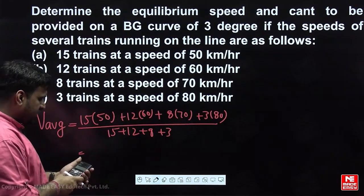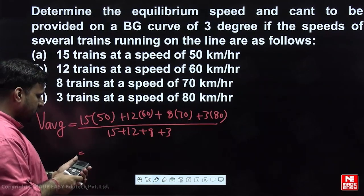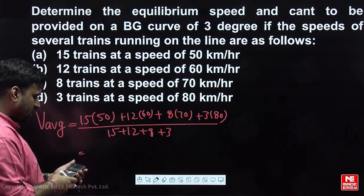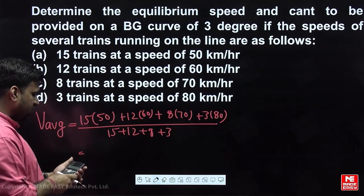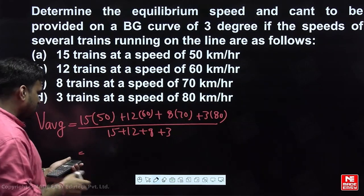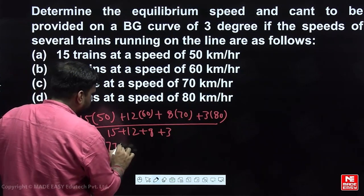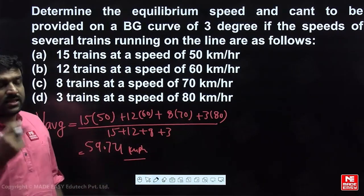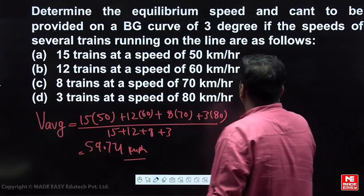The weighted average speed is calculated as: (15×50 + 12×60 + 8×70 + 3×80) divided by (15 + 12 + 8 + 3), which comes out to be 59.74 kmph. This is the equilibrium speed — the average or actual speed of the train.